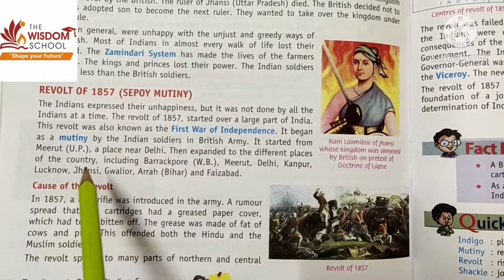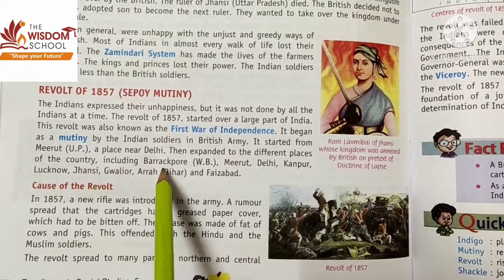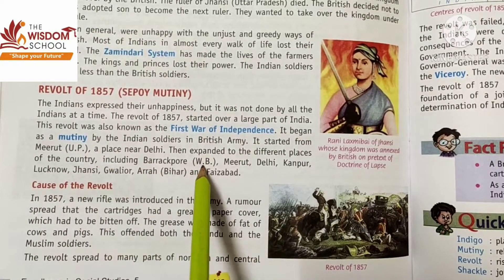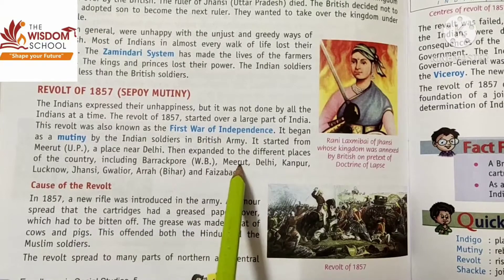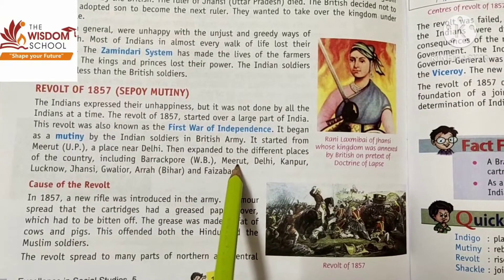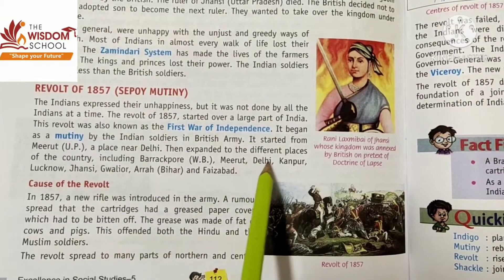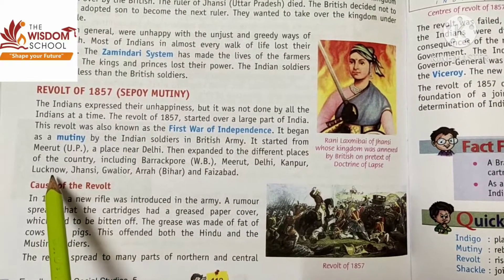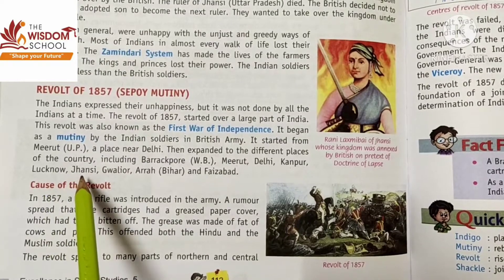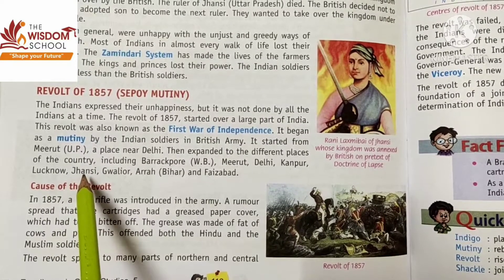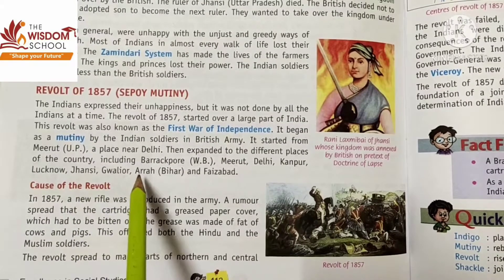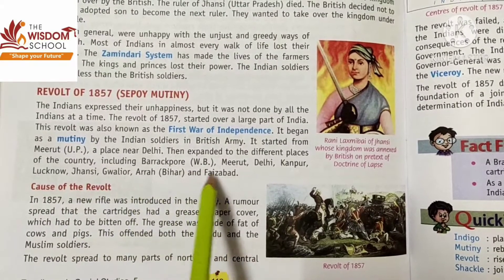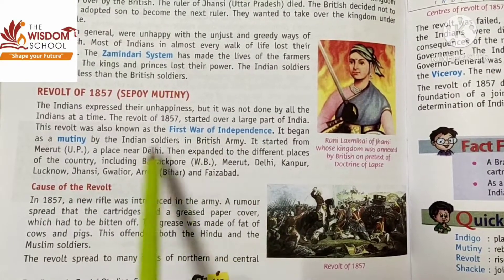The revolt expanded to different places of the country like Barakpur in West Bengal, Meerut in UP, Delhi, Kanpur in UP, Lucknow in UP, Jhansi, Gwalior, Arrah, and Faizabad.